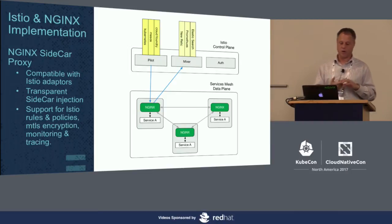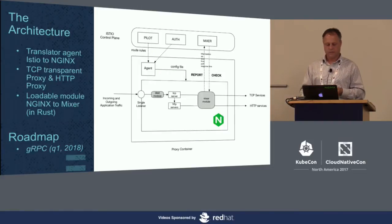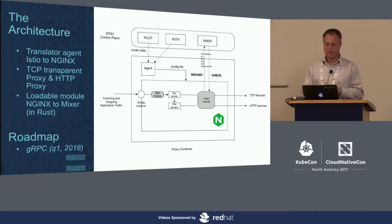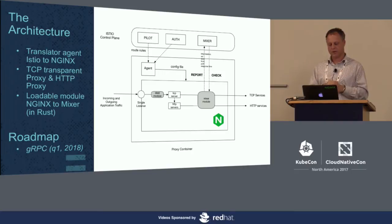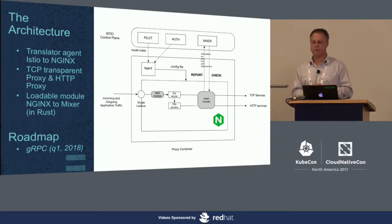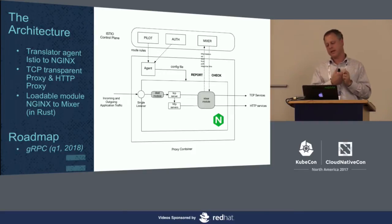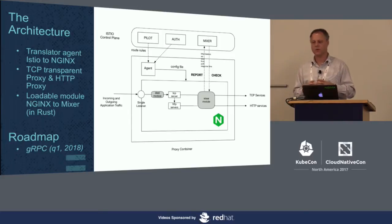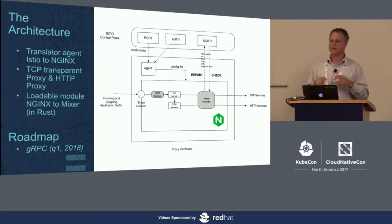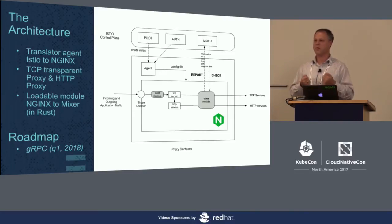In terms of the architecture, it's really the Istio control plane running with an Nginx sidecar proxy. So instead of deploying Envoy, you'll be deploying Nginx in this case. We want to make sure what we do stays compatible with Istio adapters, so it's pretty much transparent except for the installer that brings in the sidecar. The whole thing should look the same from the user's perspective. We have support for rules for various policies, MTLS, monitoring, and tracing.